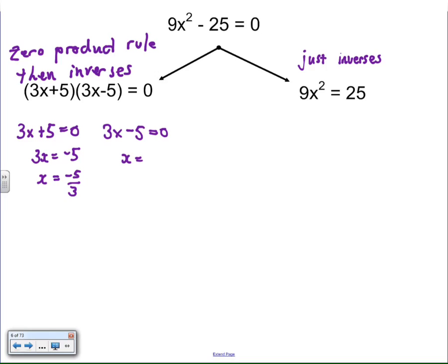Zero product rule says each of the factors could be zero to solve the equation, and then invert add 5, and then invert multiply by 3, and we invert subtract 5, invert multiply by 3, and we get two solutions, plus or minus 1⅔. Over on the left-hand side...